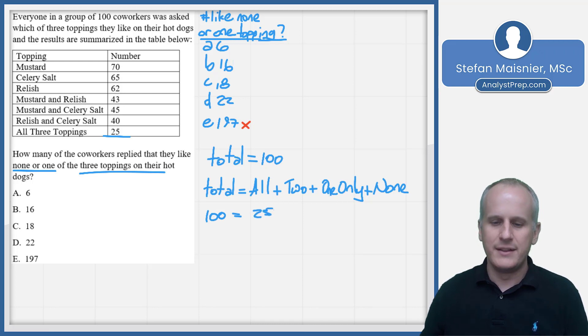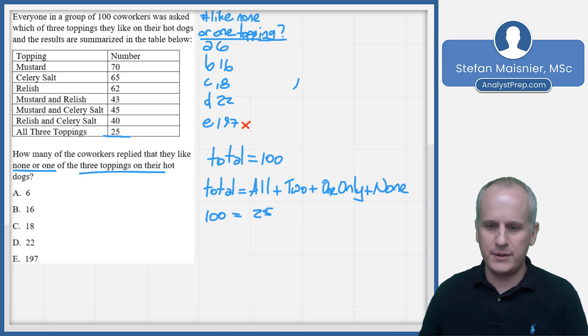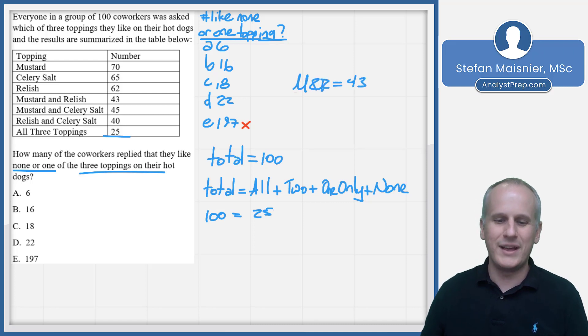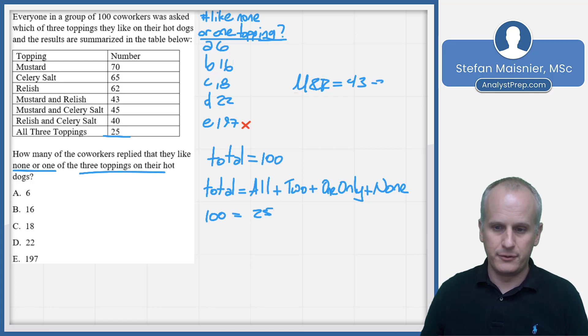It's going to be easier to figure out the number of 'alls' and the number of exactly-twos. Our total is of course 100. The 'alls' are right here at the bottom of the table: 25. Now the two-onlys — if we've got mustard and relish equal to 43, we know that 25 of those like all of them.